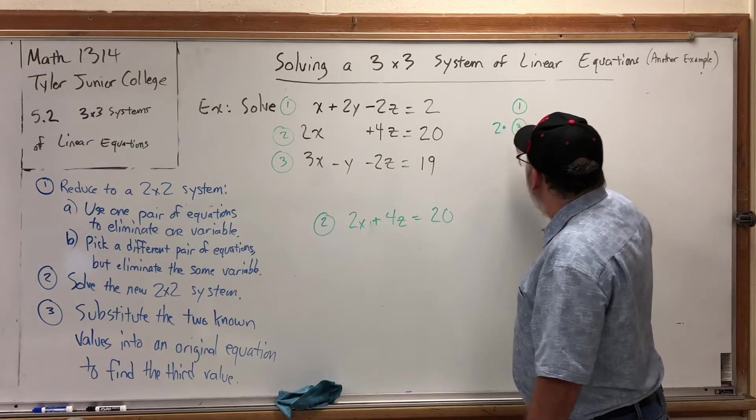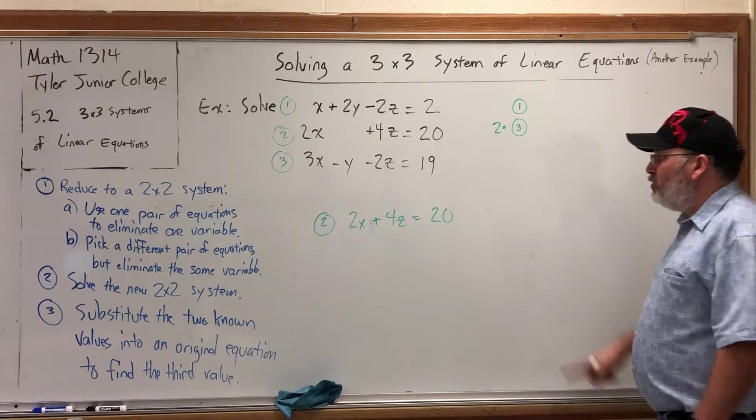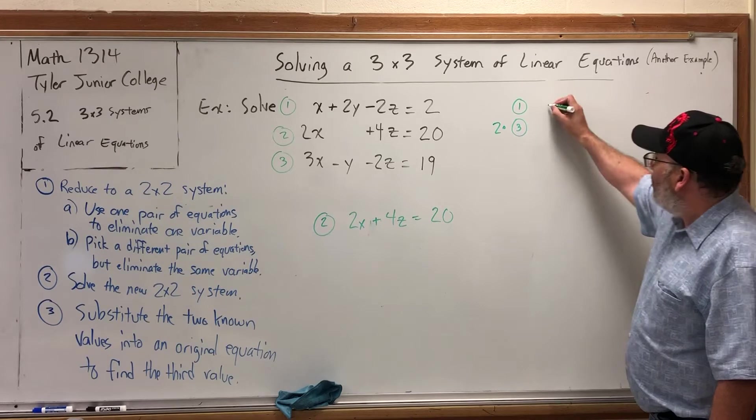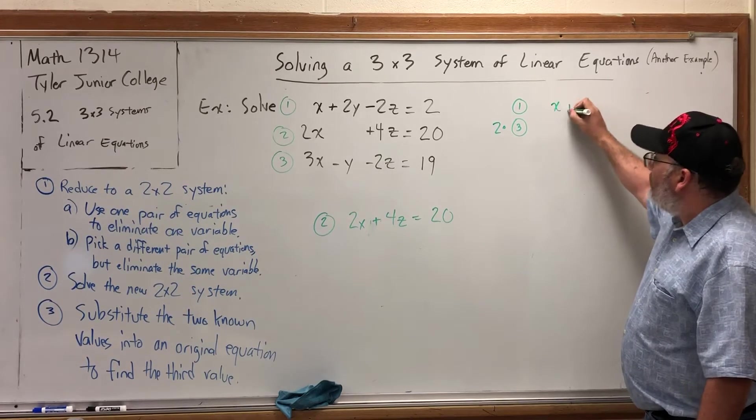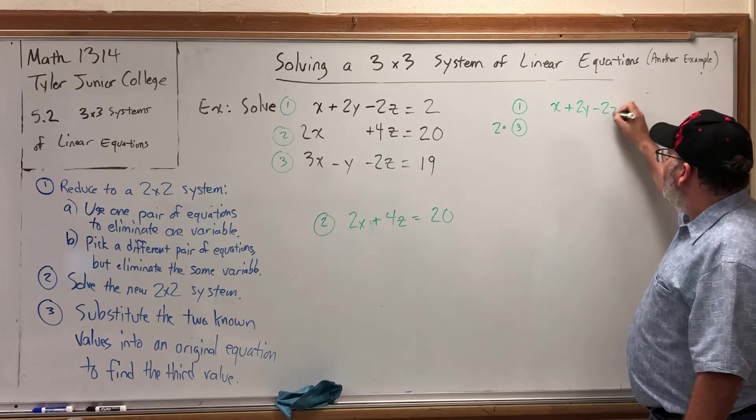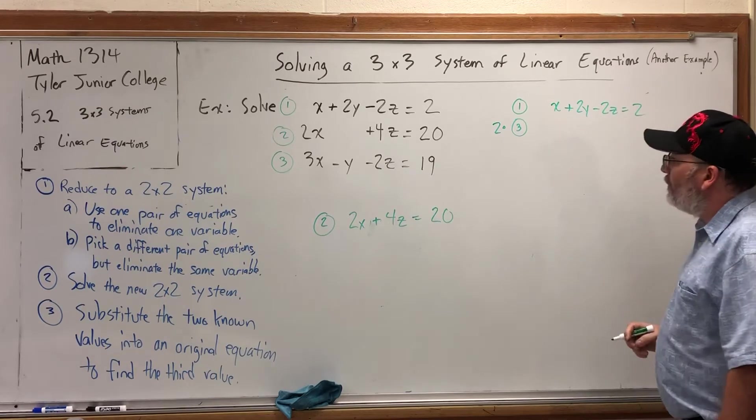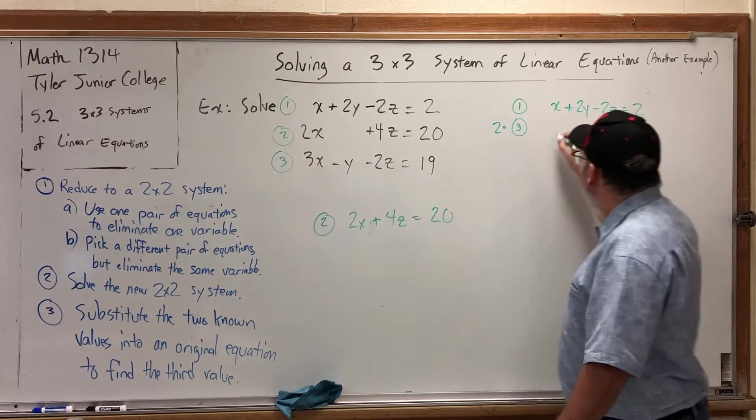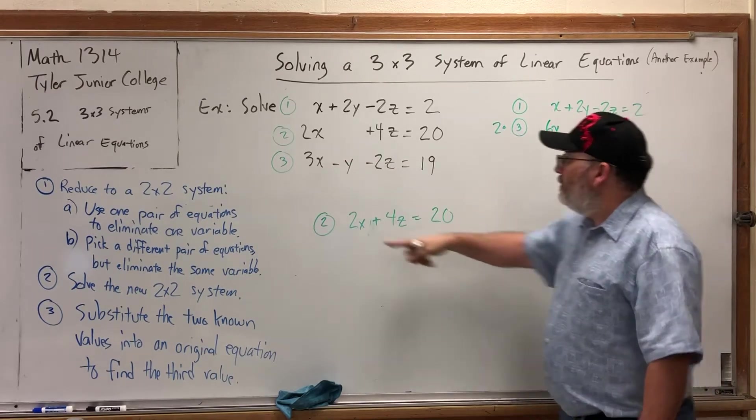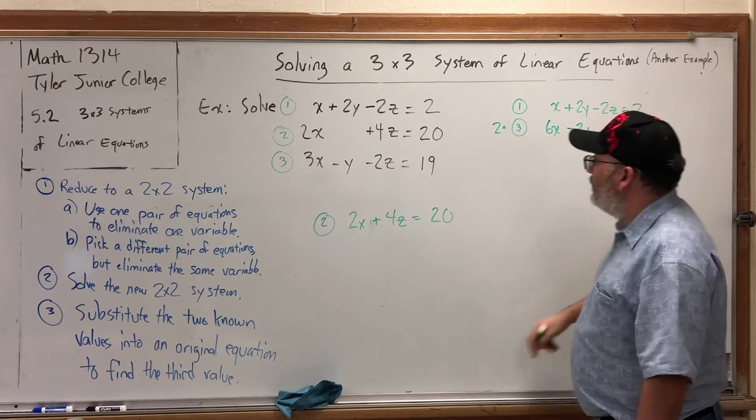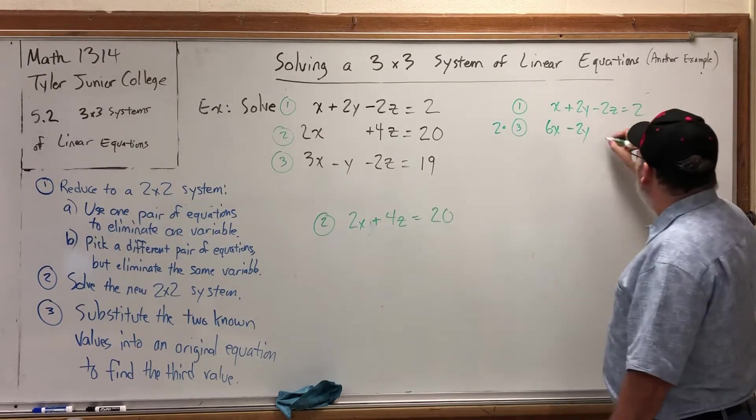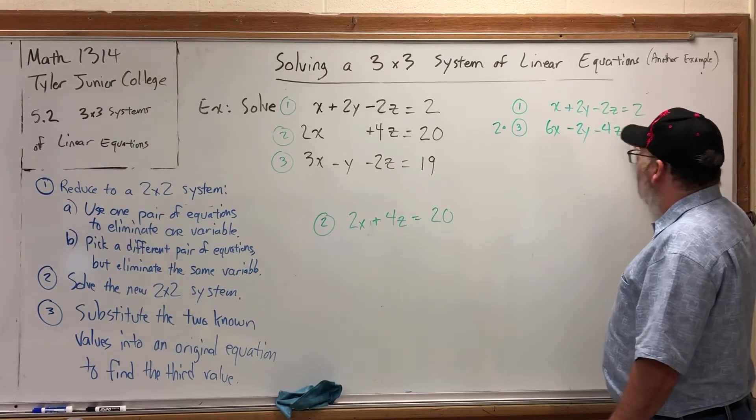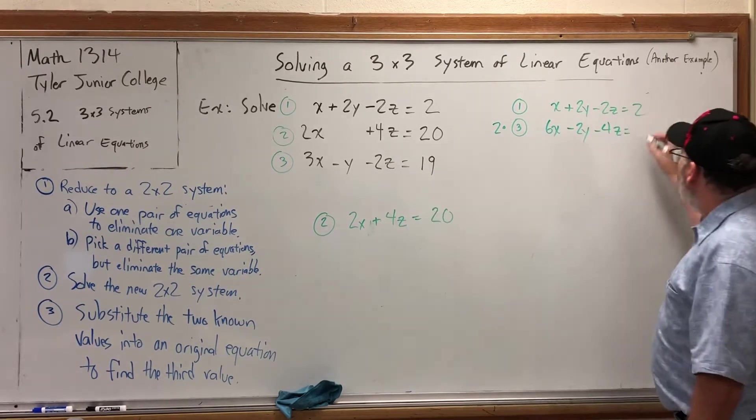So, we're going to multiply the third equation by 2, but leave the first equation alone. The first equation, x plus 2y minus 2z equals 2. 2 times the third equation: 2 times 3x is 6x, 2 times negative y is negative 2y, 2 times negative 2z is negative 4z, and 2 times 19 is 38.